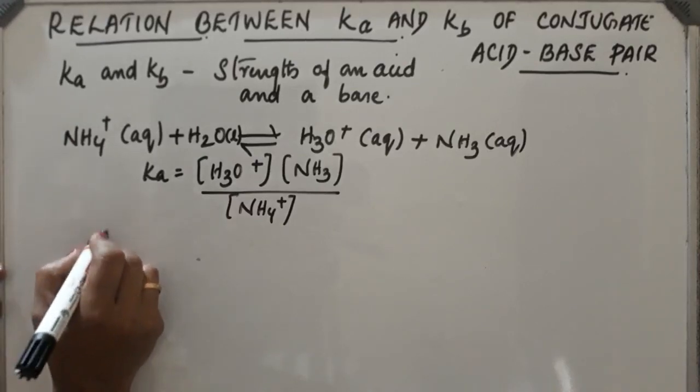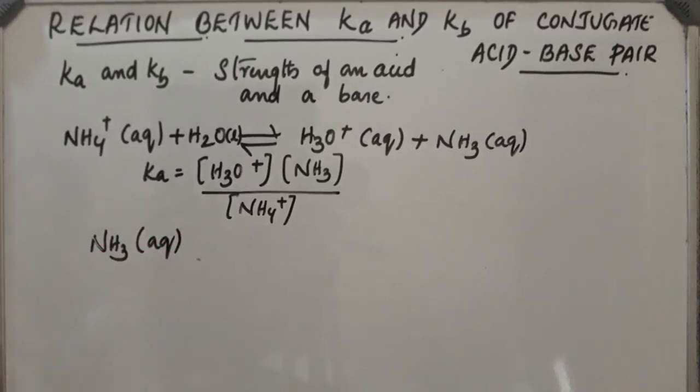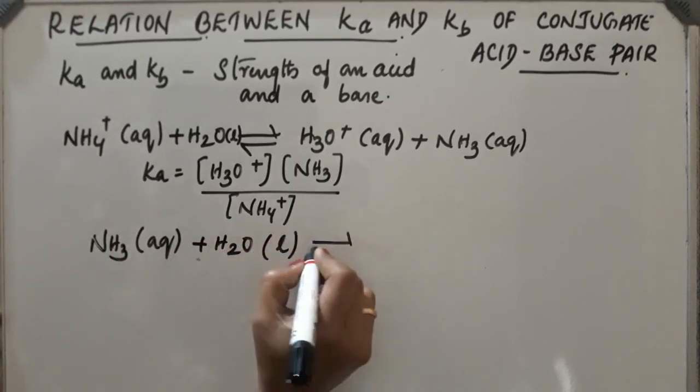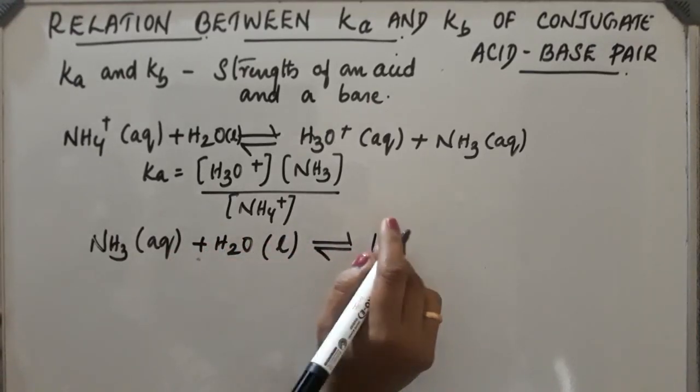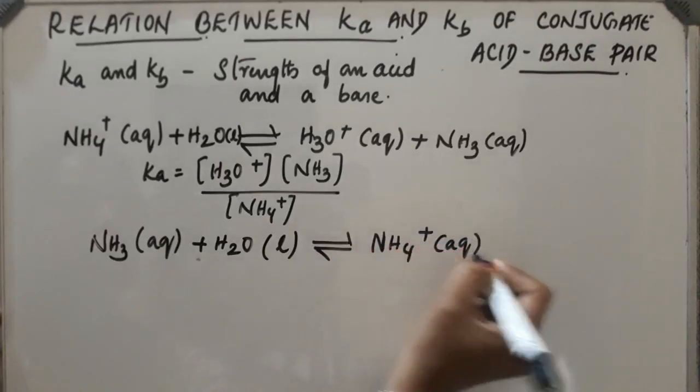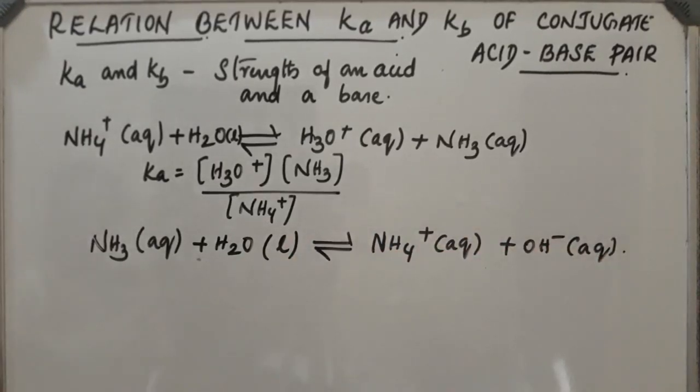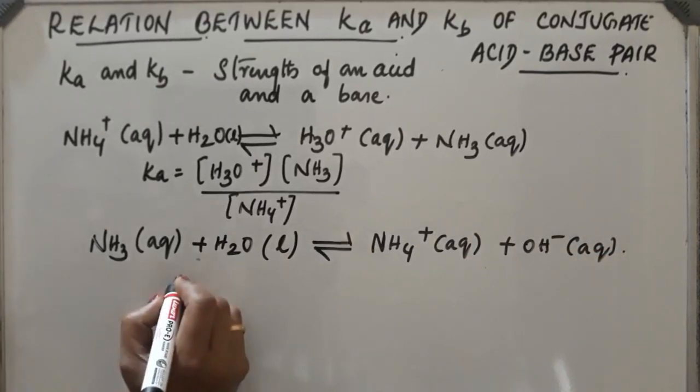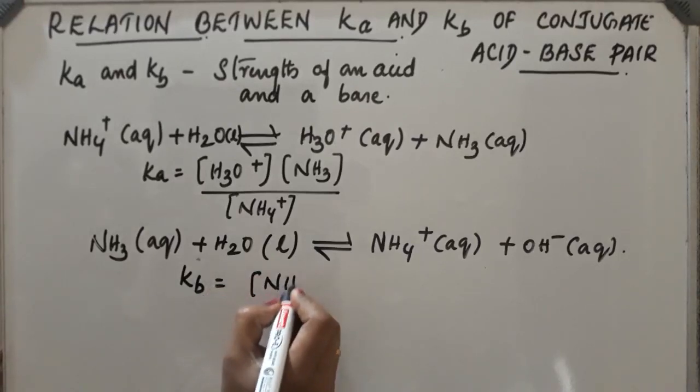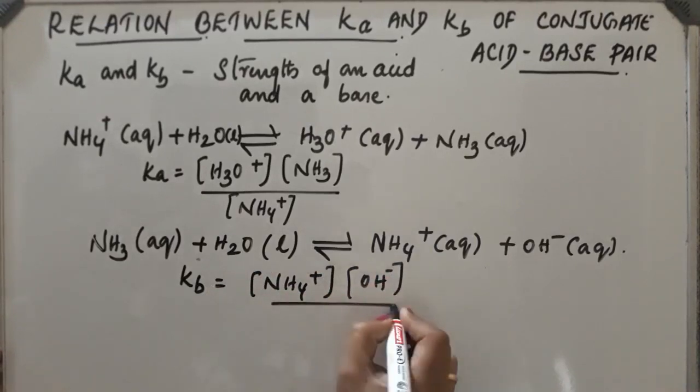Now let us take a base. NH3, ammonia is a base. On hydrolysis, it gets converted into NH4+ plus OH-. NH3 and NH4+ are conjugate acid-base pairs. So here Kb, the equilibrium constant of the base, will be equal to [NH4+][OH-] by [NH3].